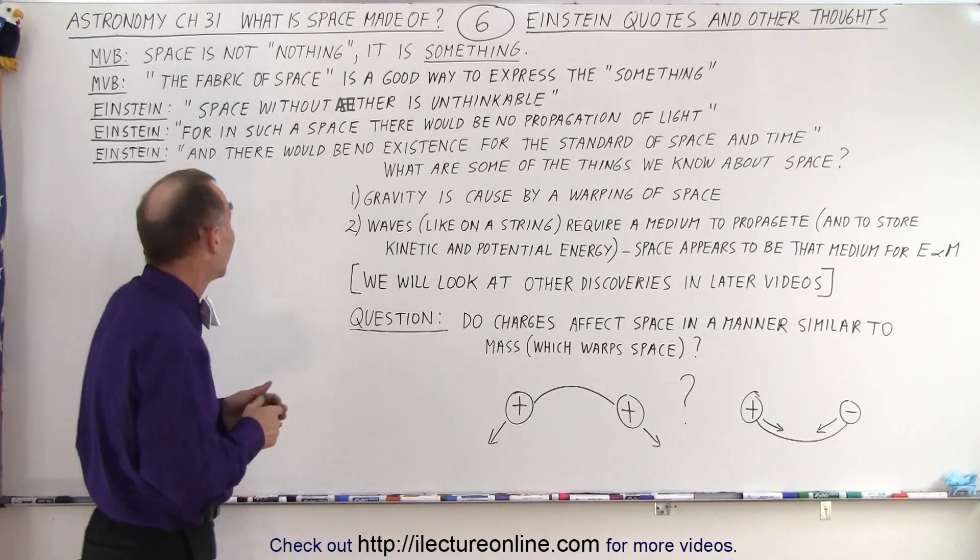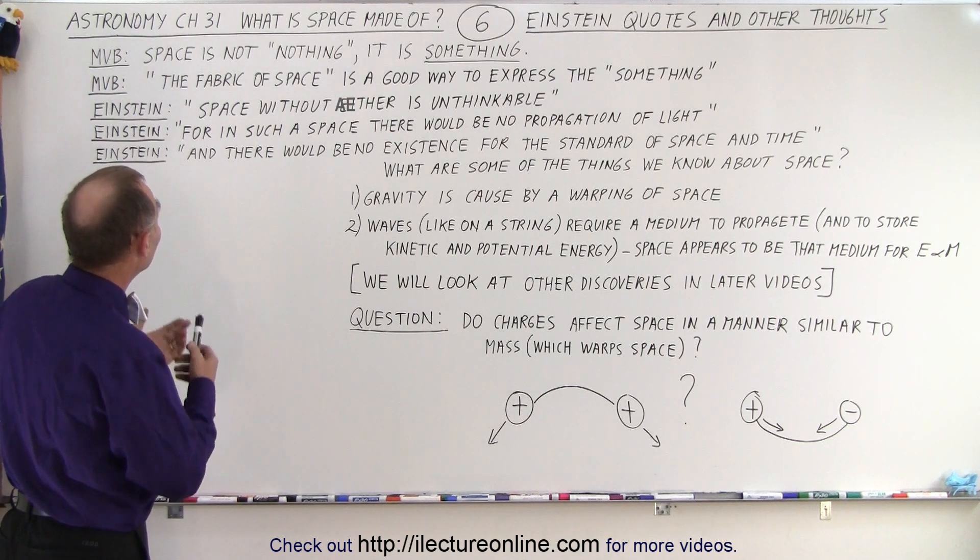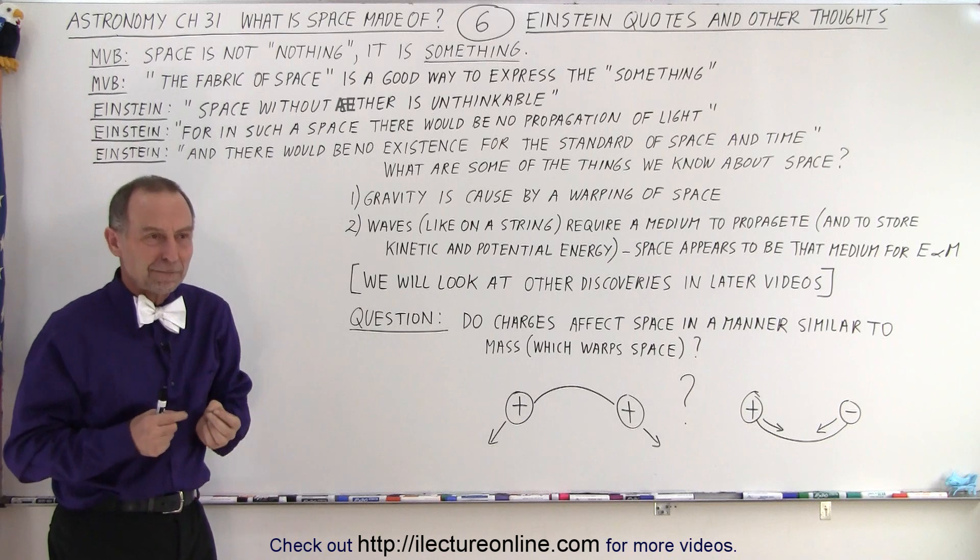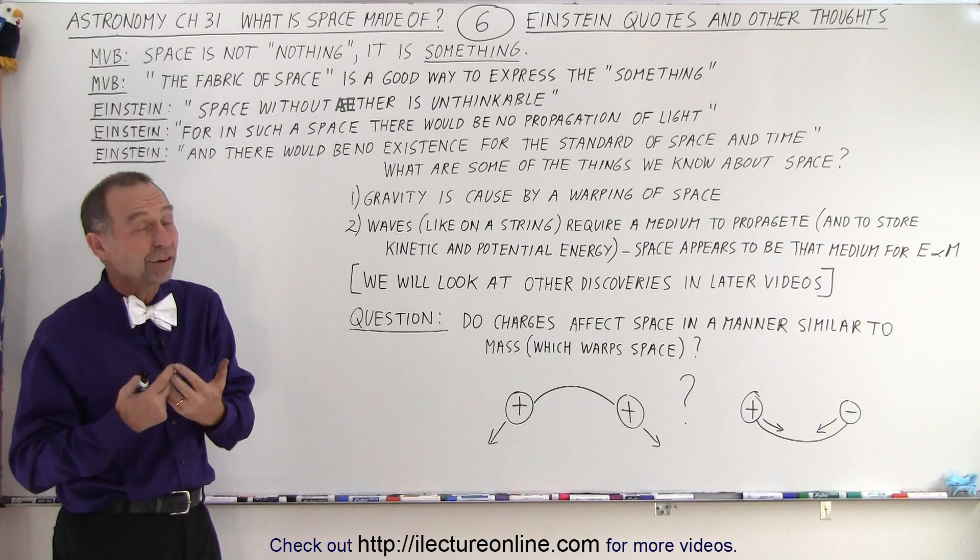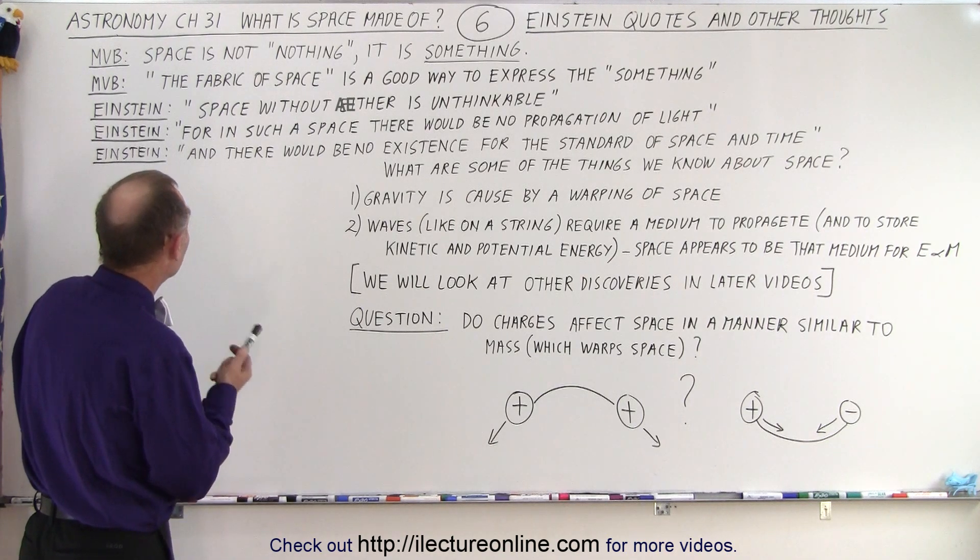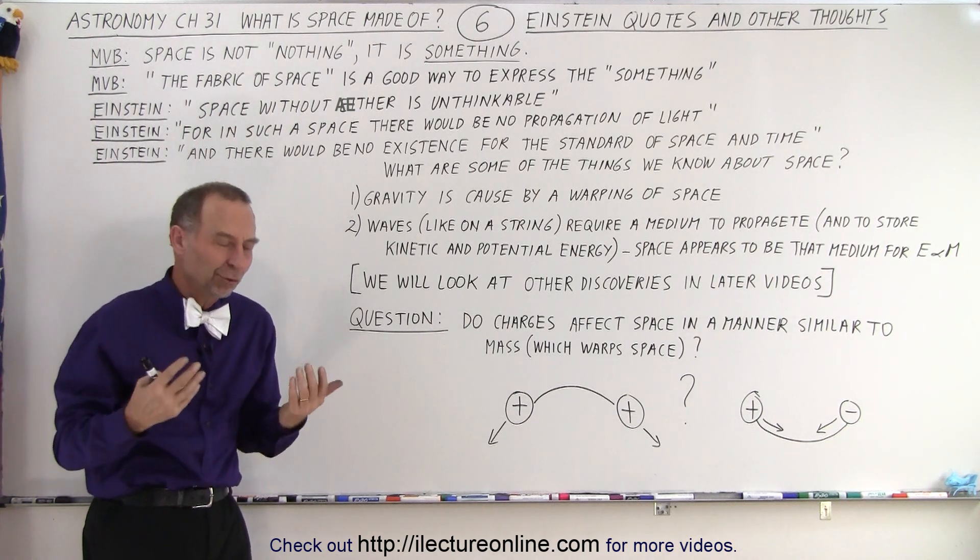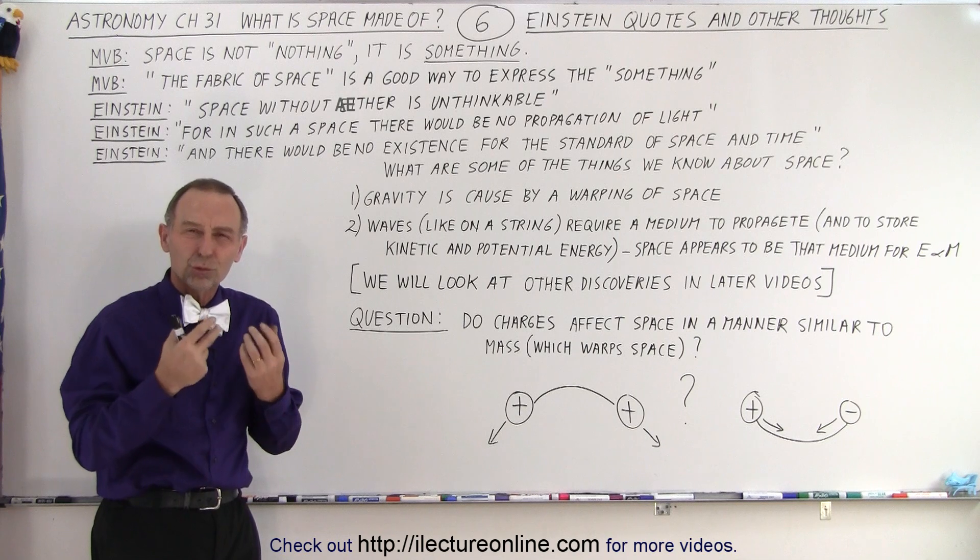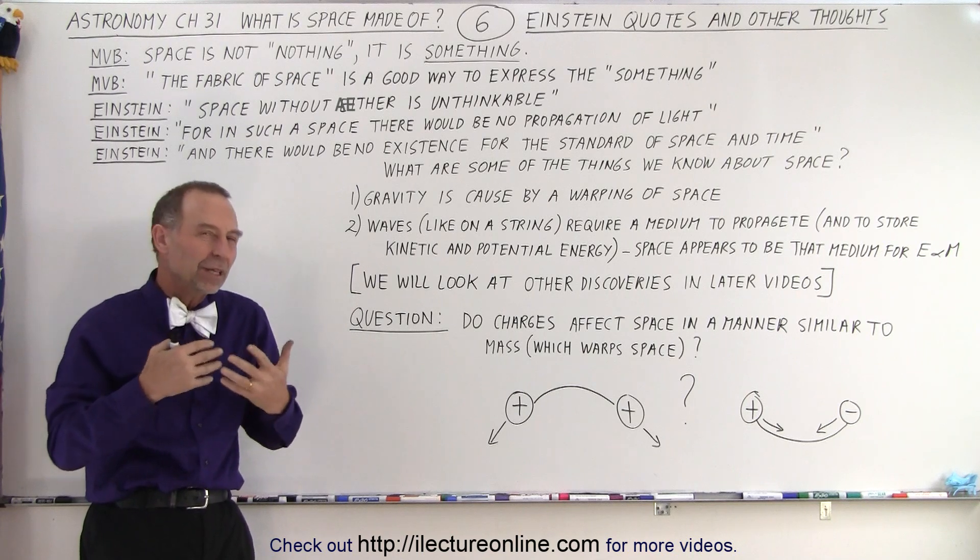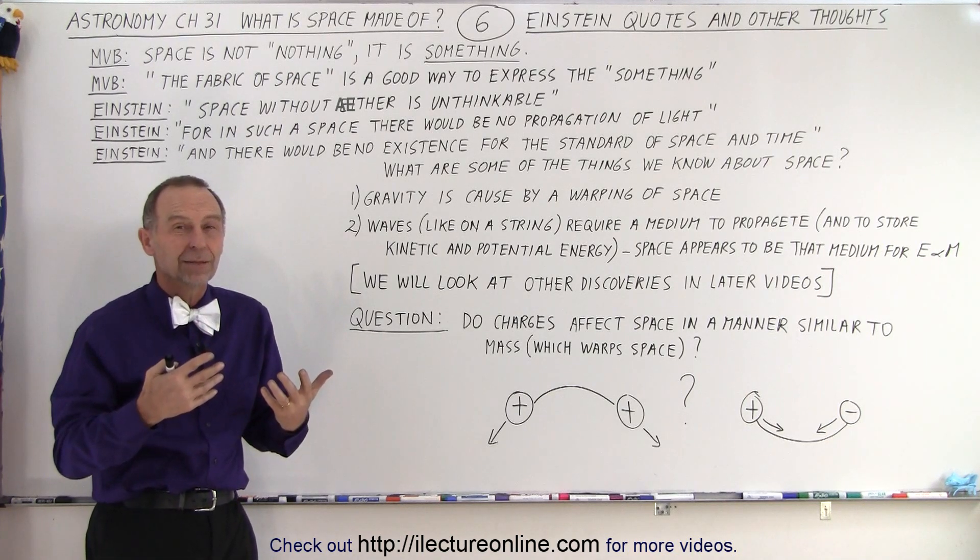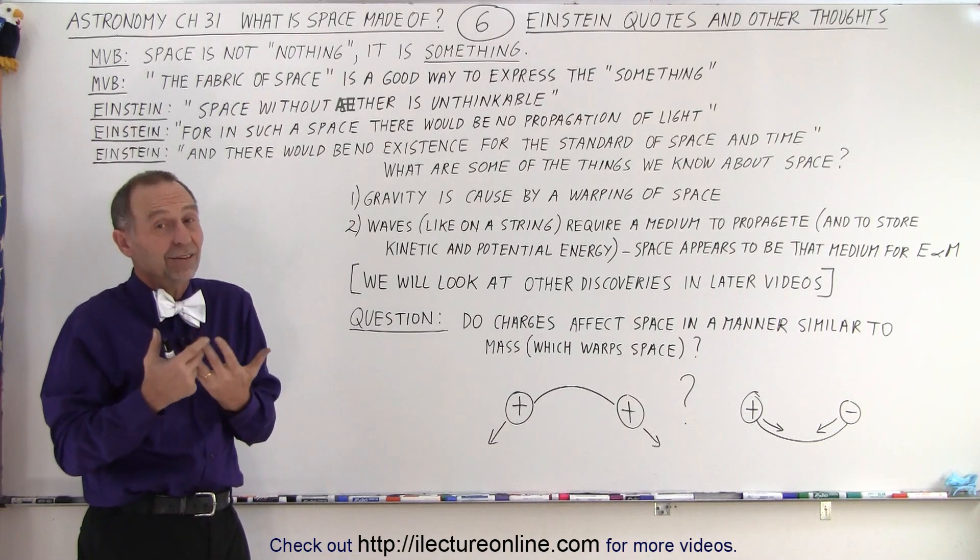I have some words of my own. Michel Van Biezen, MVB. I always tell my students that space is not nothing. It's actually the opposite of nothing. It is something. But what that something is, is very difficult to define. One way to look at it is the fabric of space. It really rings true to space being some property, some fabric, something that has properties that we can define and see. I like to call it the fabric of space, the properties associated with space.